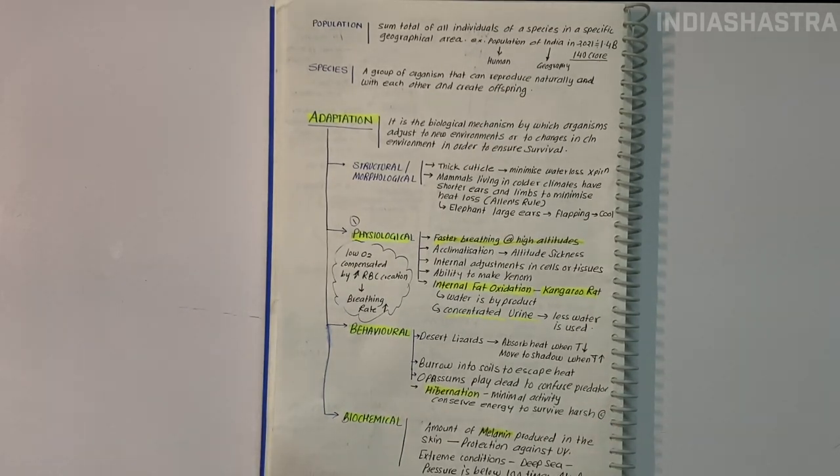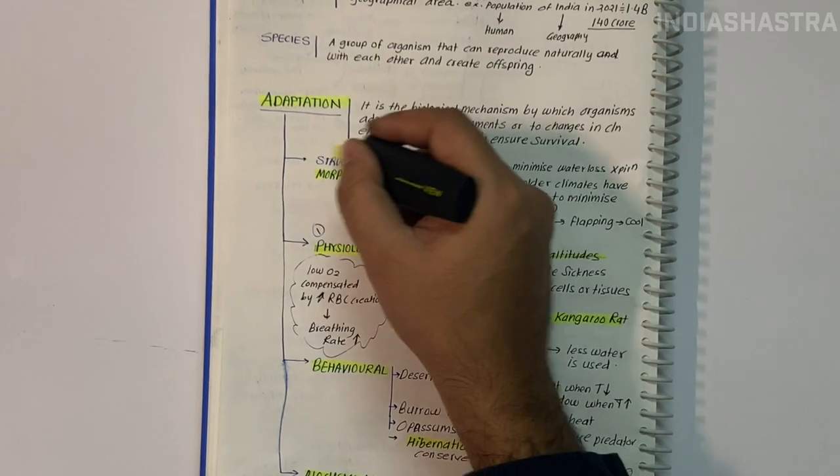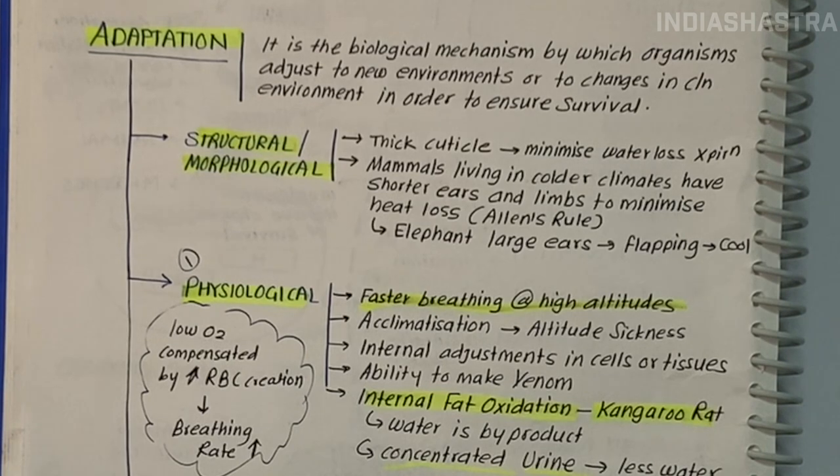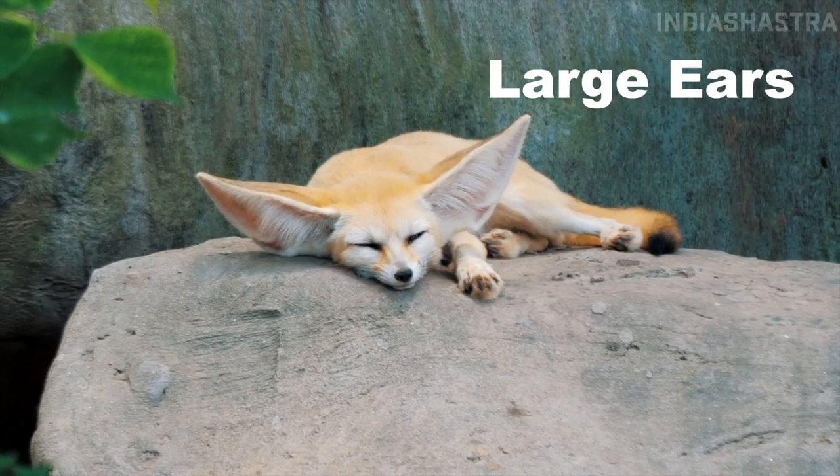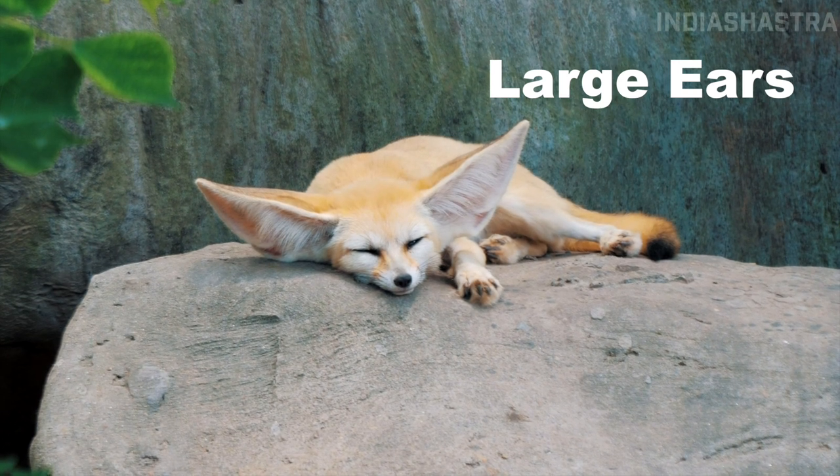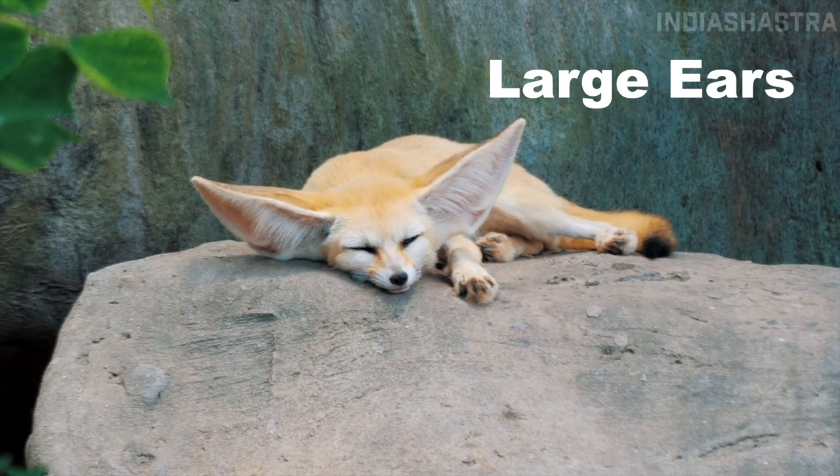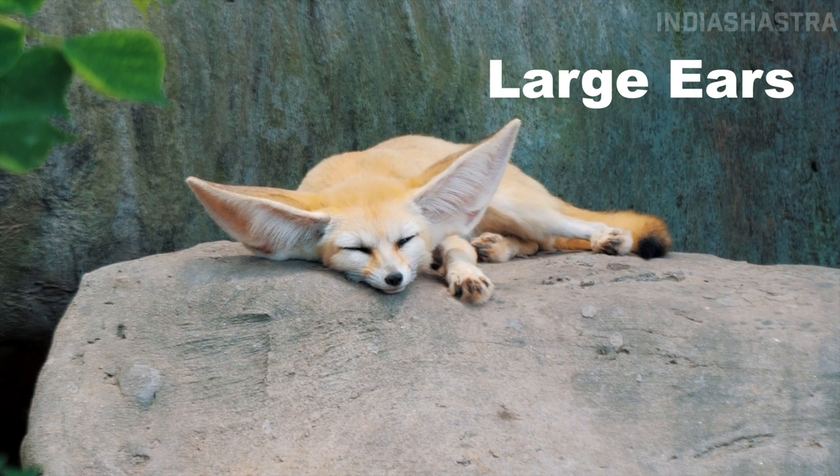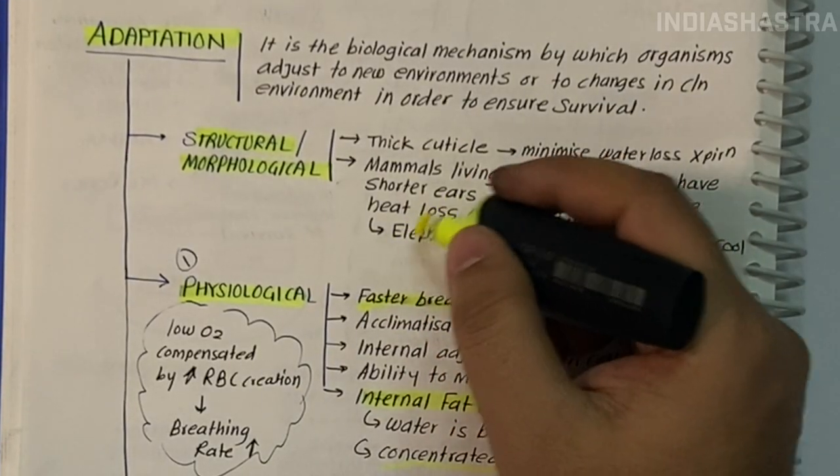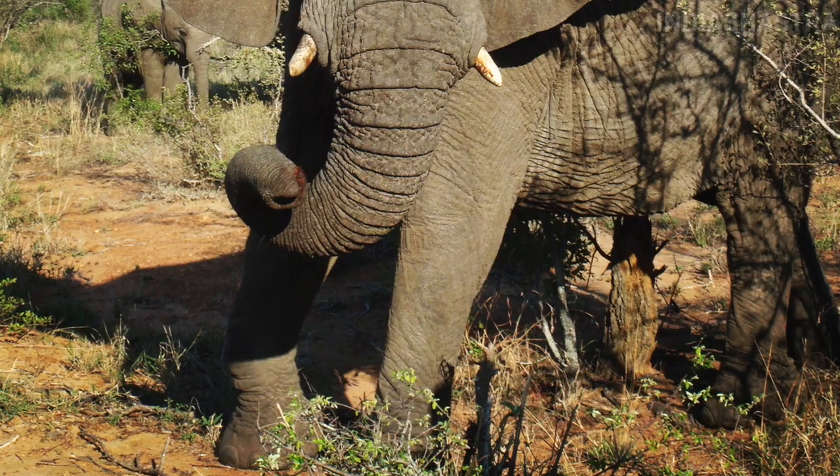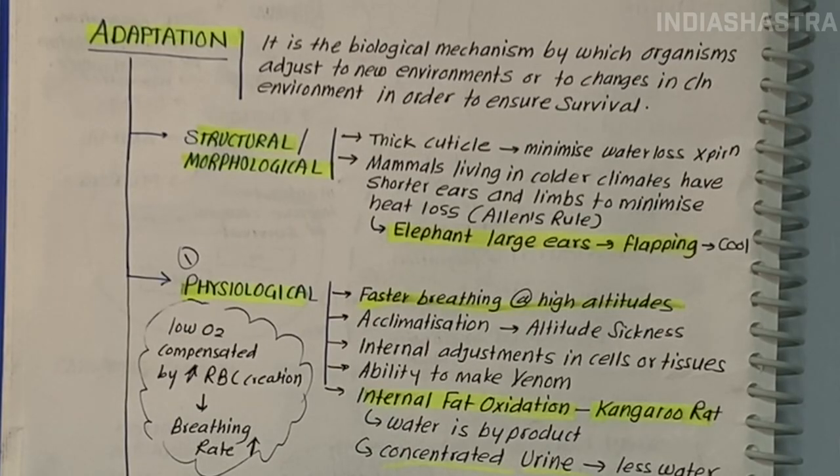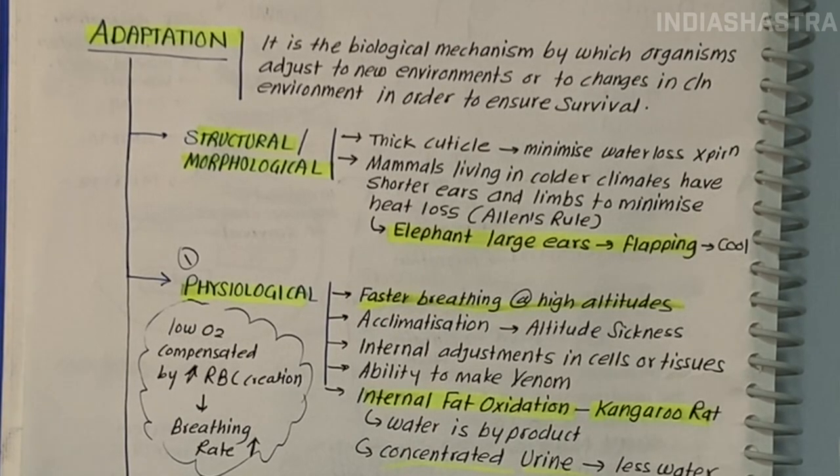Morphological adaptations are structural changes giving organisms greater survival chances. For example, fennec fox in the desert has large ears allowing heat to radiate from the body and helping it cool down. Similarly, tropical elephants have large ears, whereas polar bears have small ears. Now let's move to populations.